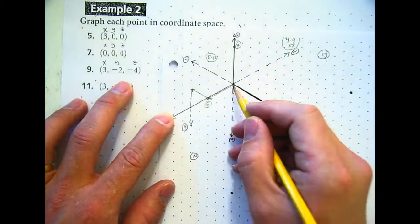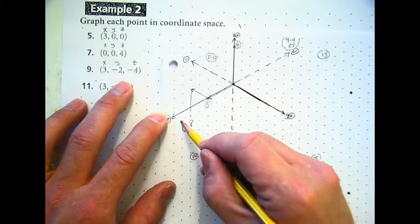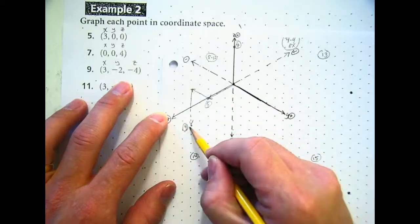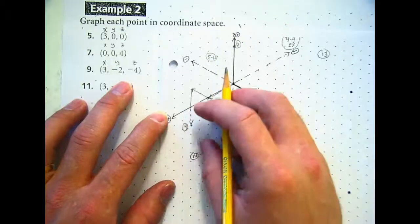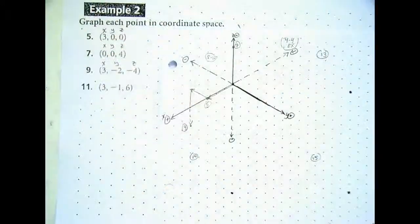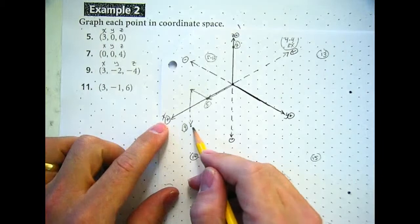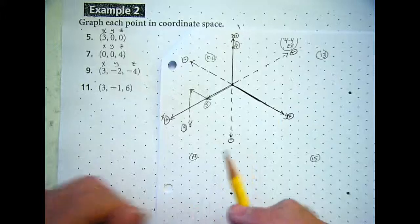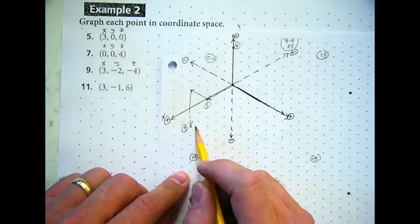Some of you might go: isn't that the same thing as going 7 on x, then negative 2 on y, and not going up? From our vantage point it would appear that you're at the same point. But if we were actually able to hold this three-dimensional space and see all the points in there, it just so happens that point overlaps with this point from our current vantage point.